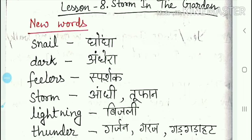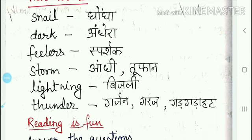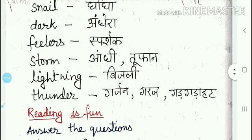Second is dark — dark ka matlab hai andhera. Third is feelers — feelers ka matlab hai asparshak. Fourth is storm — storm ka matlab hai aandhi tufaan. Fifth is lightning — lightning ka matlab hai bijli. And the last one is thunder, that is garjan, garaj, ya phir gargarahat.